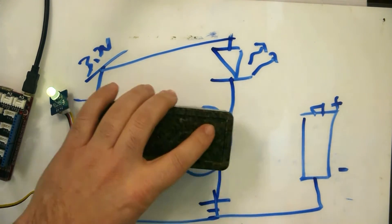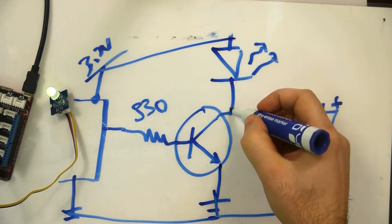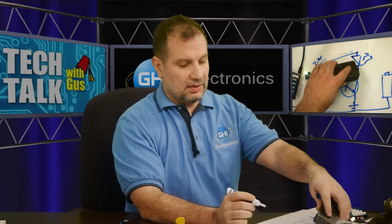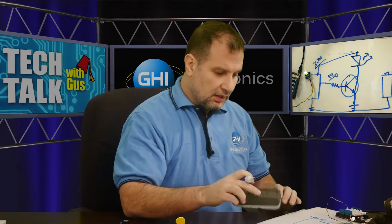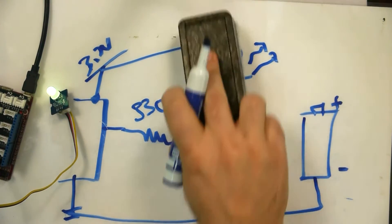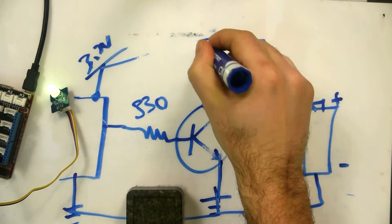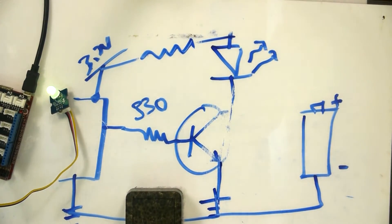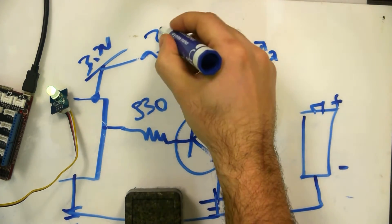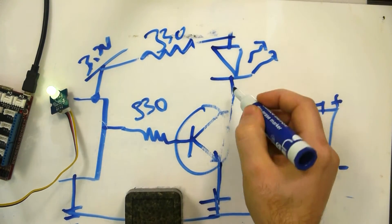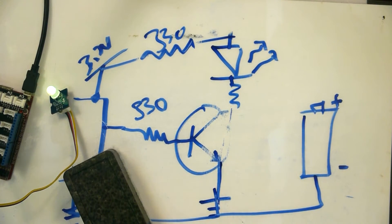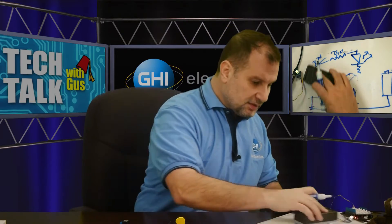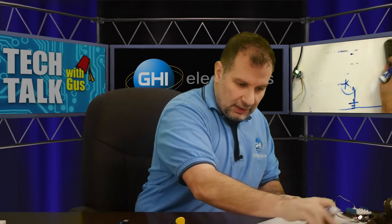If we took the transistor out completely and just had a direct connection to ground, this LED would just come on. The only thing missing from this circuit is a current-limiting resistor going to the LED, just like we talked about before — again, 330 ohms. This can be on either side of the LED; it wouldn't make any difference. So that's how you would control an LED.